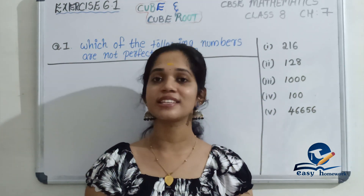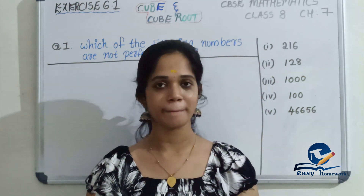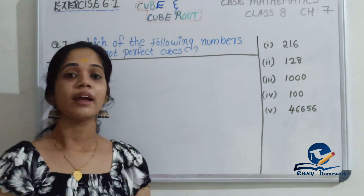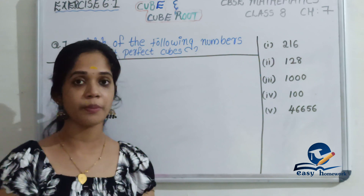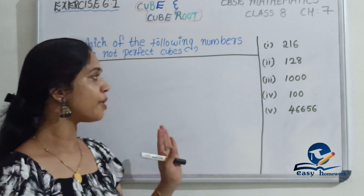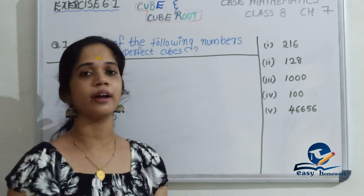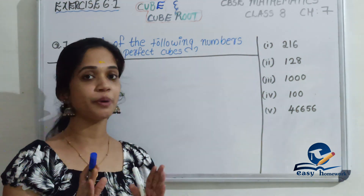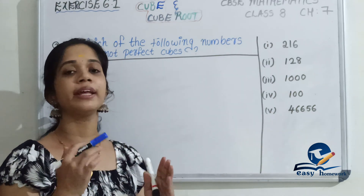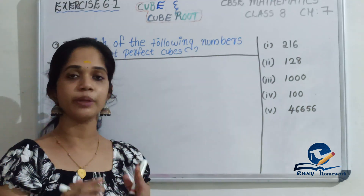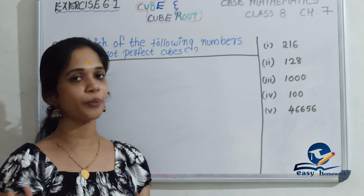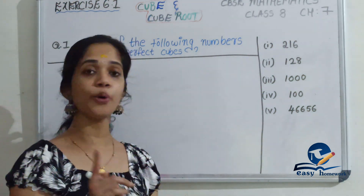Let's discuss Exercise 6.1, Question number 1. The question asks: which of the following numbers are not perfect cubes? To check the conditions for perfect cubes, let's do prime factorization. We write the prime factors in groups of 3. If all prime factors can be grouped into triplets with no remainder, then the number is a perfect cube.